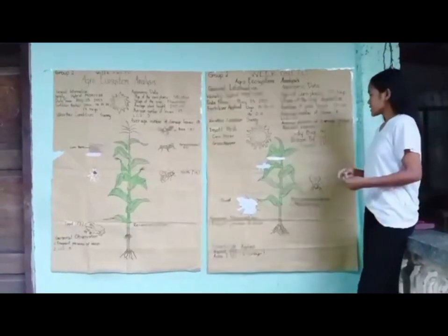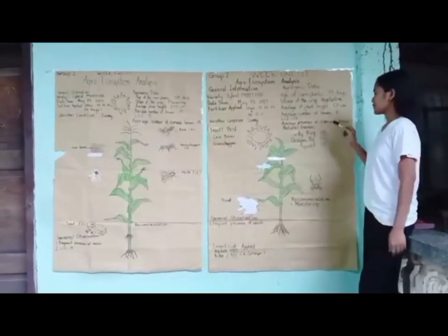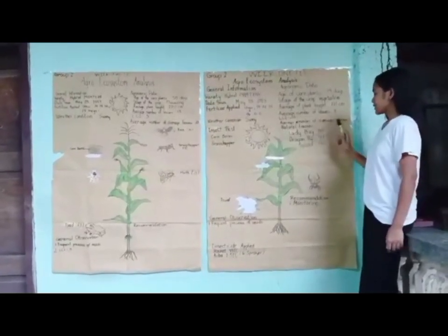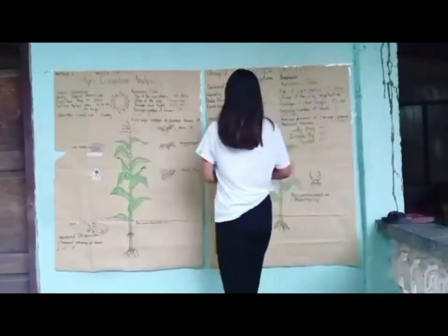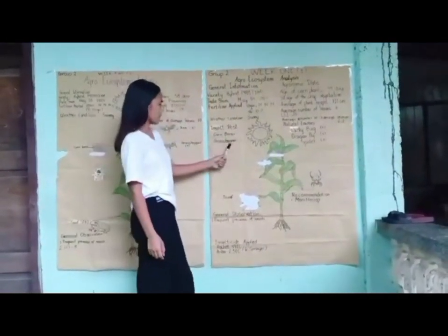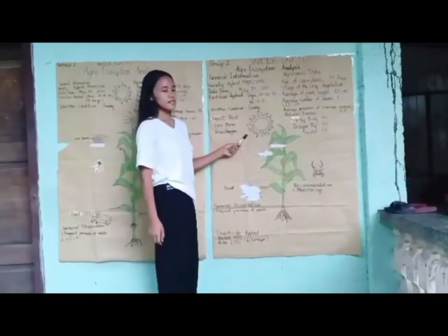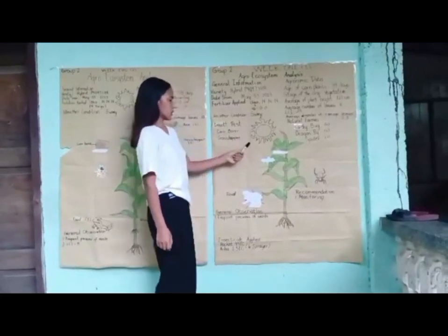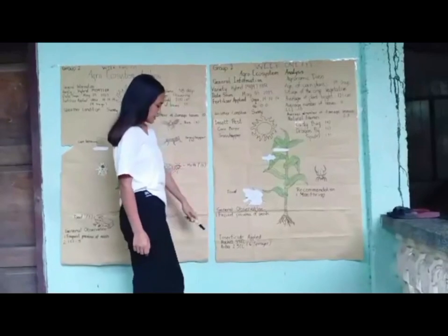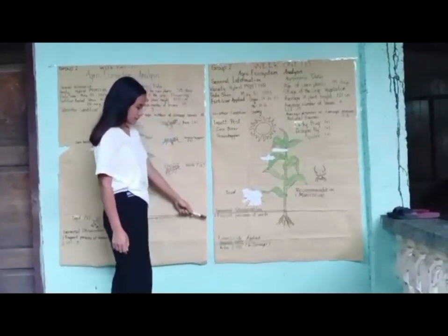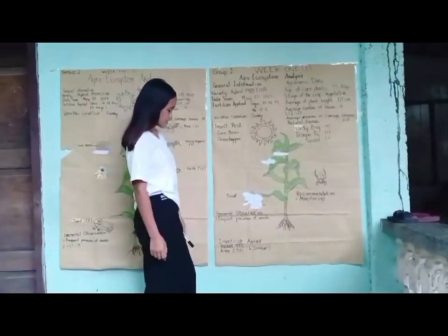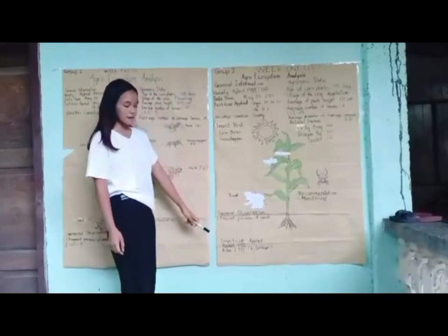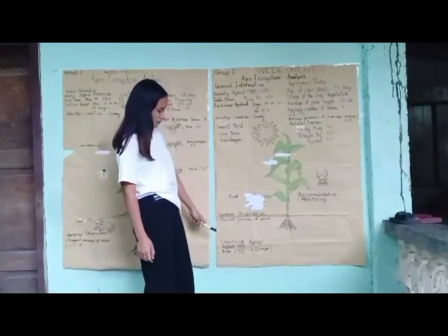The natural enemies observed are: ladybug — 4 out of 10 crops; dragonfly — 2; and spider — 3. Insect pests include corn borer, which was present in all traps, and grasshopper — 3 observed. Also toad was present. The general observation noted frequent presence of weeds. The insecticide applied is Trapet 44 EC and Ariba 2.5 EC.